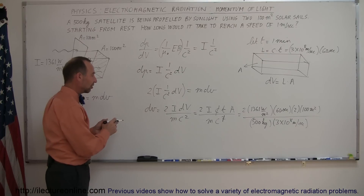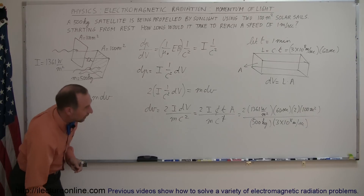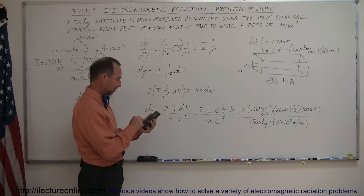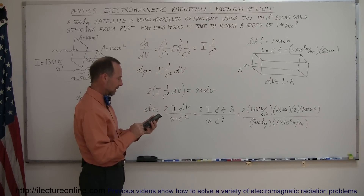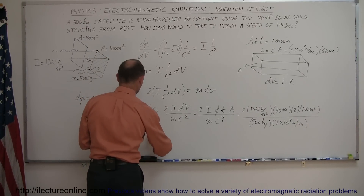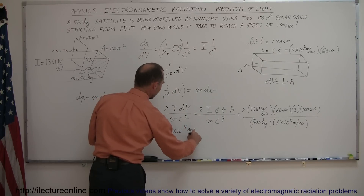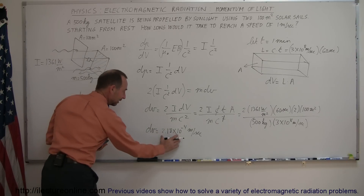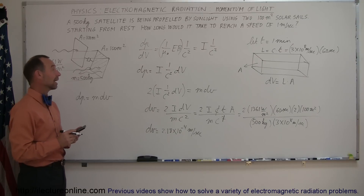That gives us the change in velocity due to sunlight reflecting off the solar sails over one minute. Calculating: 2 times 1361 times 60 times 200, divided by 500, divided by 3 times 10 to the 8. The result is dv equals 2.18 times 10 to the minus 4 meters per second. So after one minute, the spaceship is moving at 2.18 times 10 to the minus 4 meters per second.